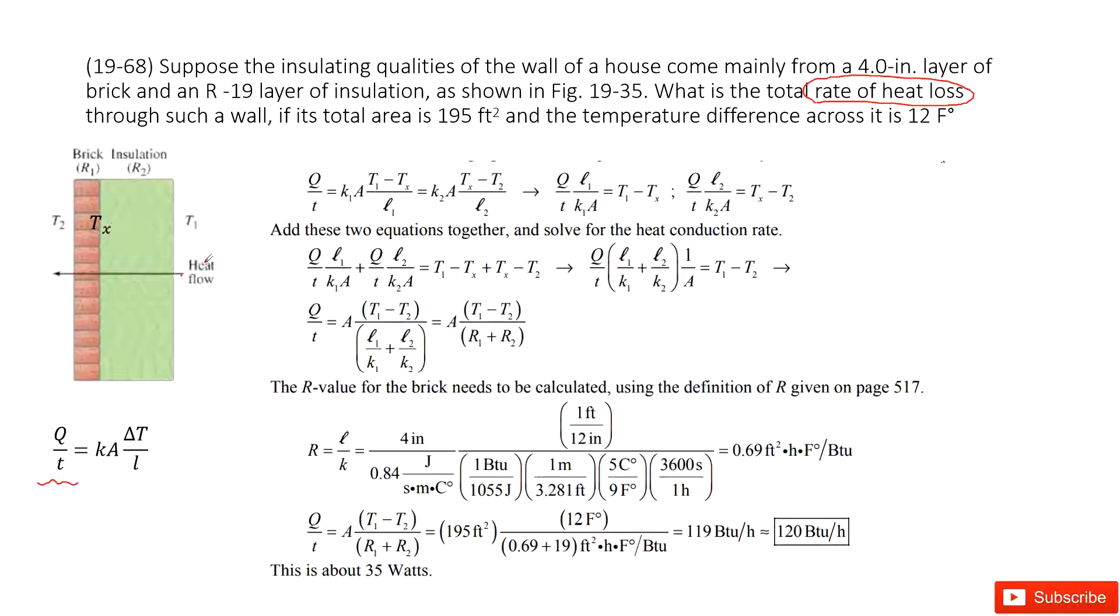The energy flow - because energy is conserved - the energy loss at this point equals the energy at this point equals energy lost at this point. We can write the energy lost from T1 to Tx as this equation, and it also equals the rate of heat loss from this position to this position.